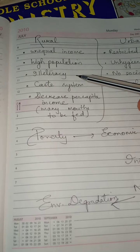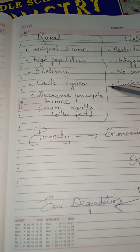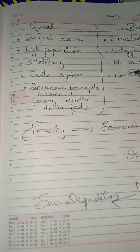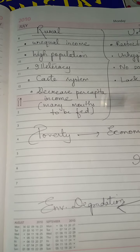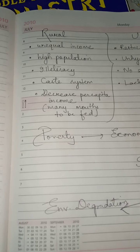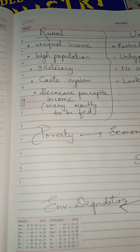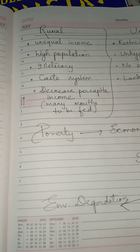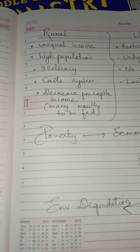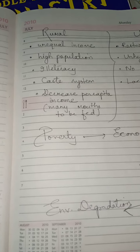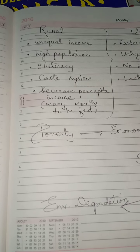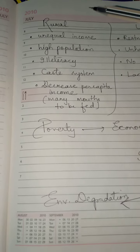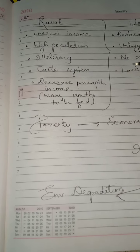Illiteracy is also one of the reasons why rural poverty prevails. People are not in support of education and prefer sending children to work rather than providing education. The caste system still prevails in many areas, where elite classes bully the poor sections of society, and heritage-based discrimination continues in many regions.